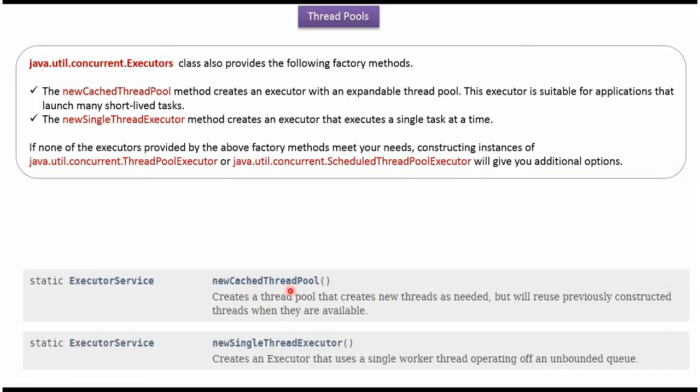Using newCachedThreadPool method, we can create expandable ThreadPool. And using singleThreadExecutor method, we can create an executor that executes a single task at a time. And these factory methods are available in Executors class.